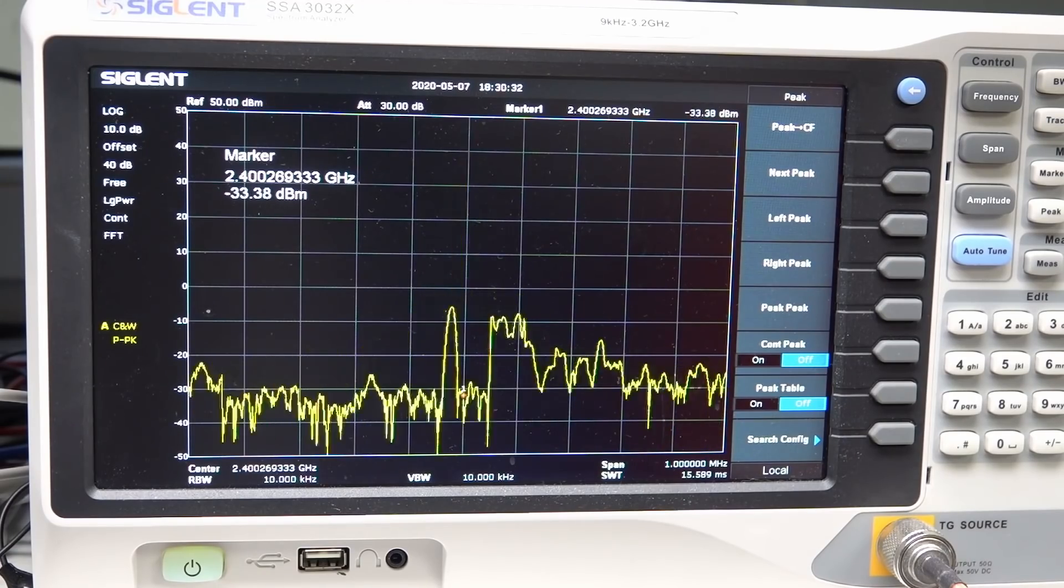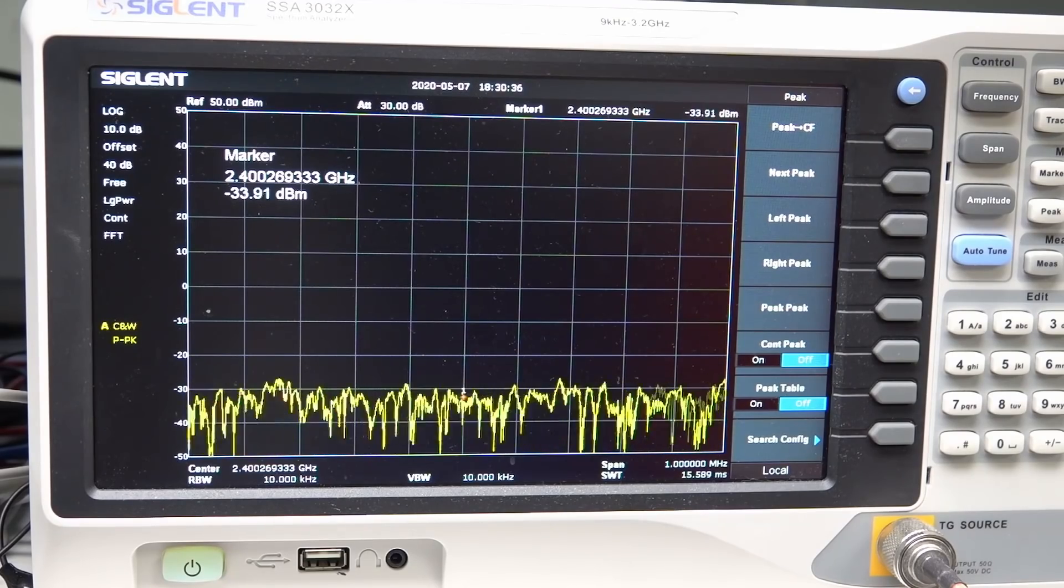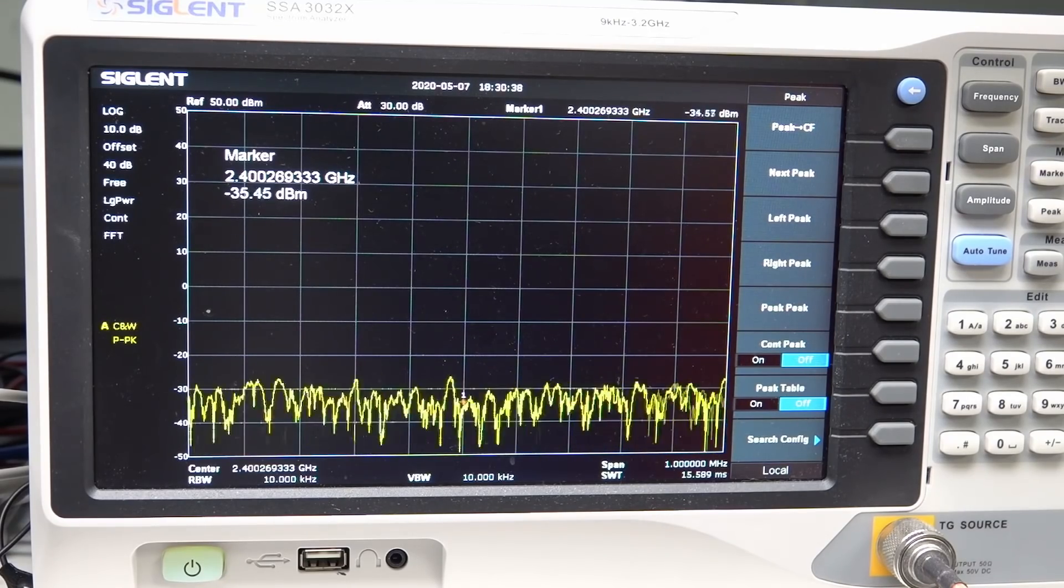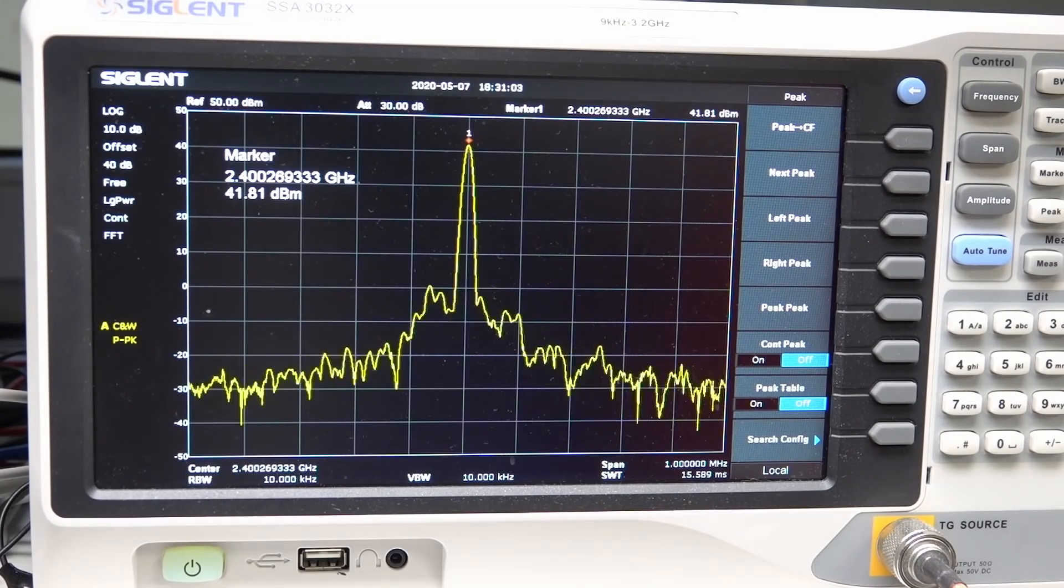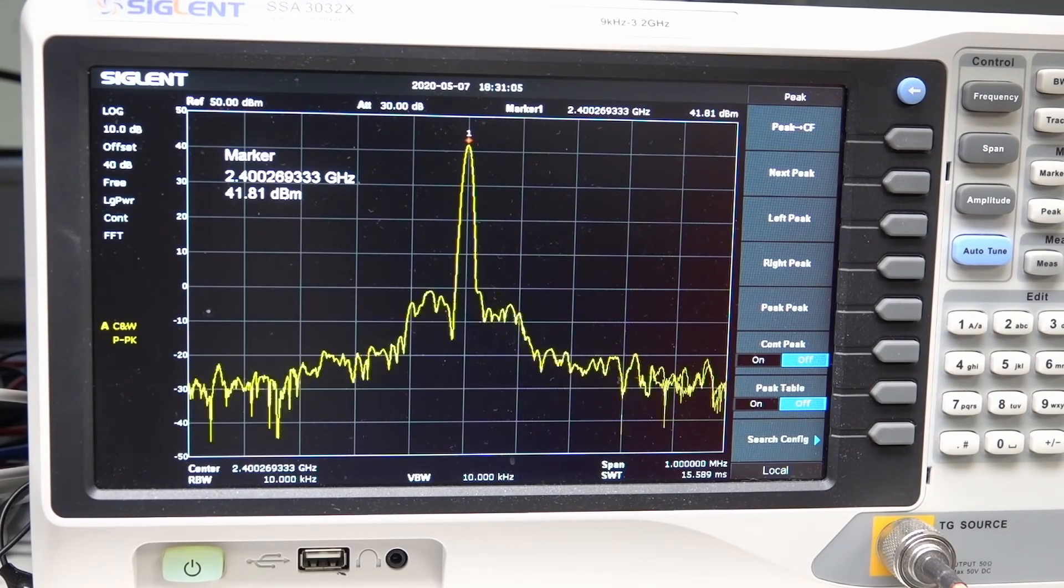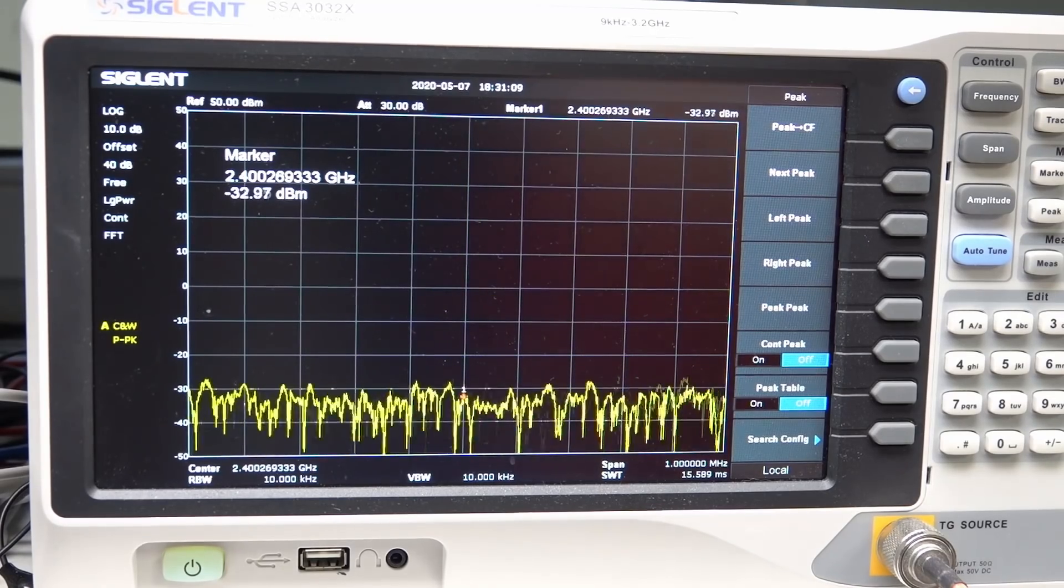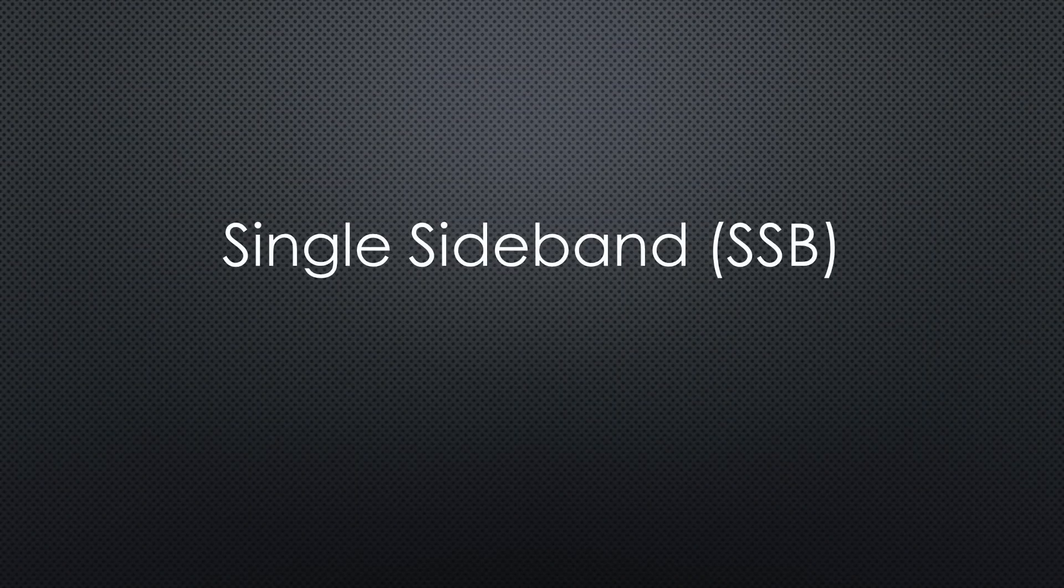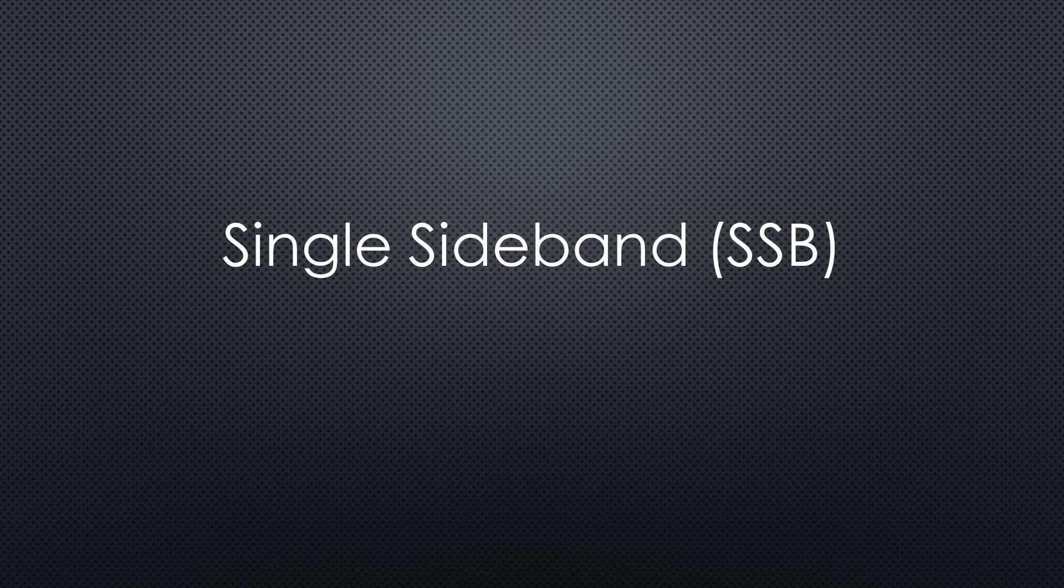The case gets quite warm after these short tests. I assume it has to be cooled if I want to talk for a longer time. So, the setup works and delivers nearly the 43 dBm peak power. Now I can reveal another secret, at least for the non-HAM operators. I told you in the last video that I will use single sideband modulation.